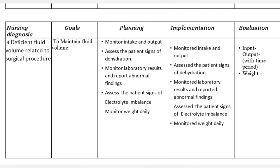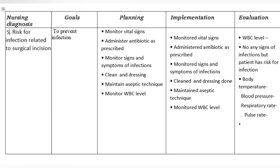Evaluation: Monitor input and output with time period and weight. Nursing diagnosis 5: Risk for infection related to surgical incision. Goal: To prevent infection. Planning: Monitor vital signs. Administer antibiotics as prescribed. Monitor signs and symptoms of infection. Clean and change dressing. Maintain aseptic technique. Monitor WBC level. Implementation: Monitored vital signs. Administered antibiotics as prescribed. Monitored signs and symptoms of infection. Cleaned and changed dressing. Maintained aseptic technique. Monitored WBC level. Evaluation: WBC level — no signs of infection, but patient has risk for infection. Document body temperature, blood pressure, respiratory rate, and pulse rate.